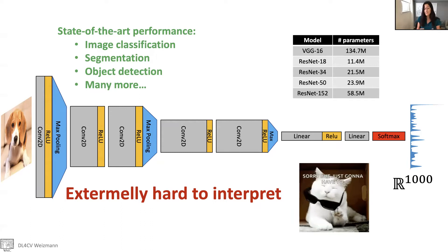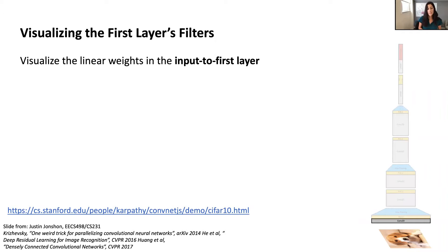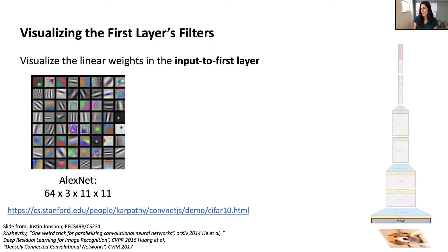We're going to focus mostly on models trained for visual classification. Each layer is essentially a filter bank where the kernels are learned. One immediate thing we can do is visualize those learned kernels. In the first layer operating on RGB, we can grab those kernels and visualize each one as a tiny image. Here's an example from the first convolutional layer: 64 different kernels, each 11×11, with three channels because it operates on an RGB image.